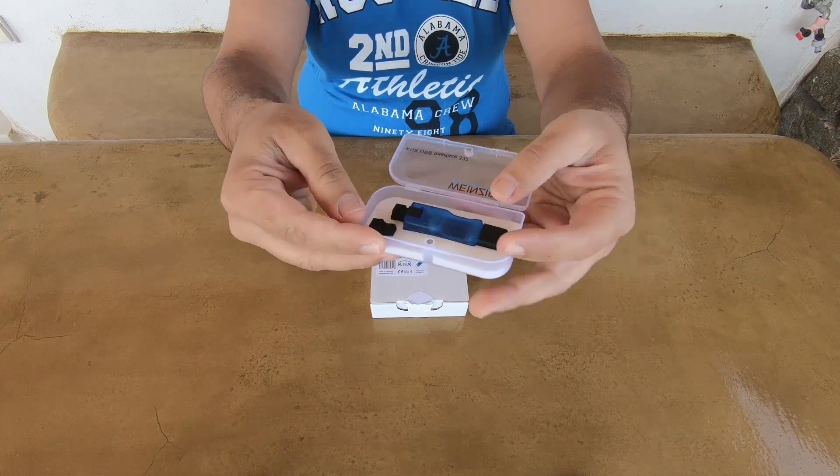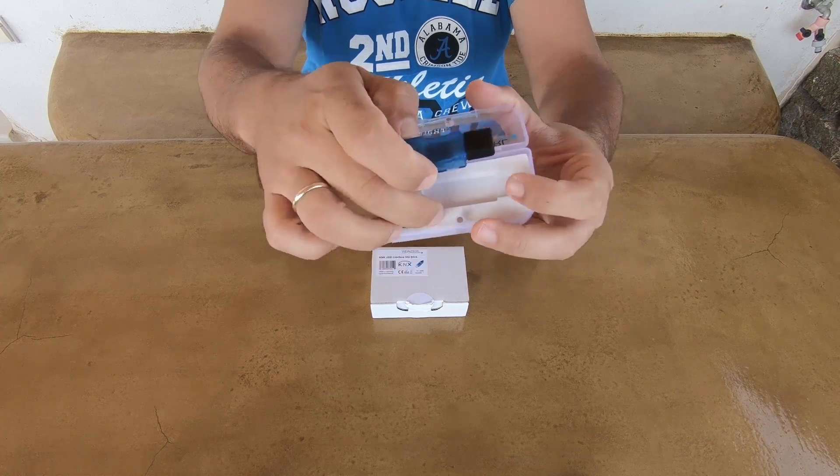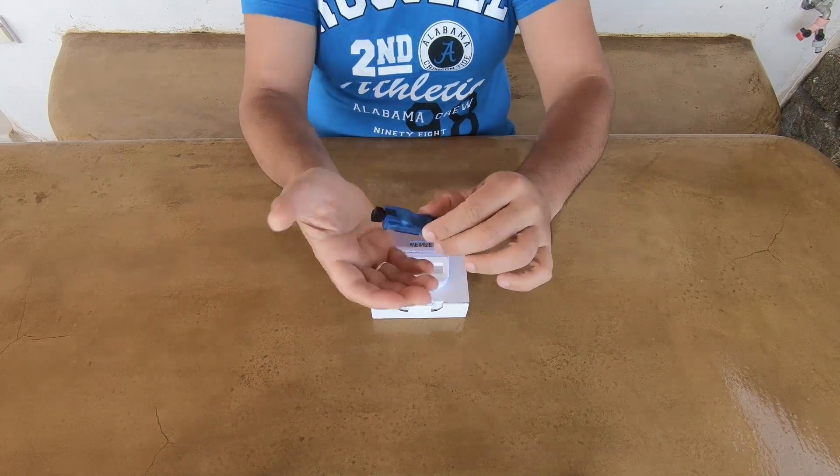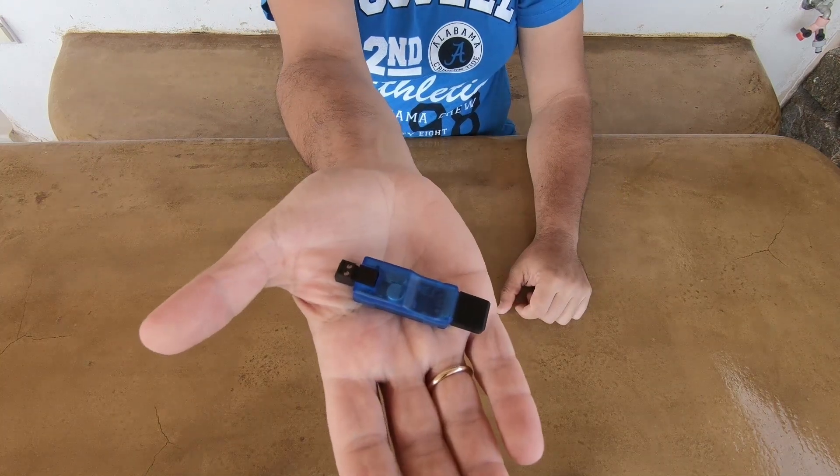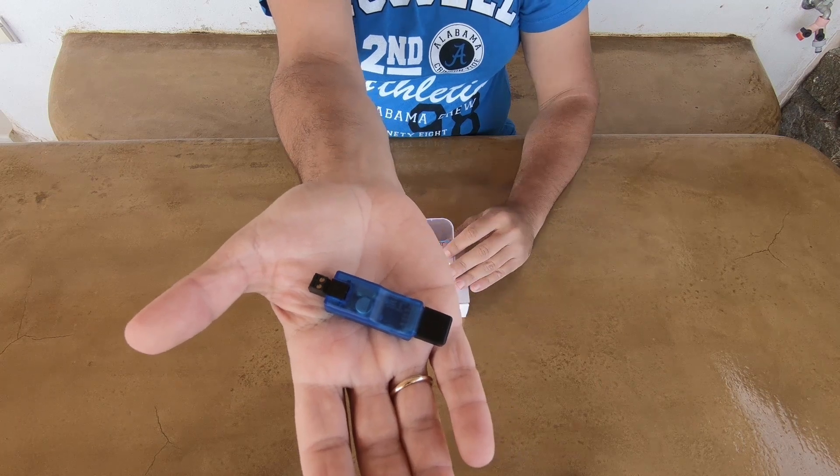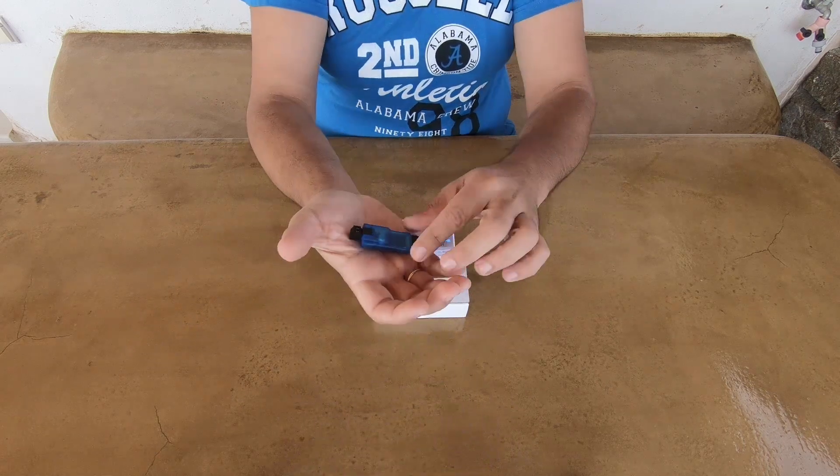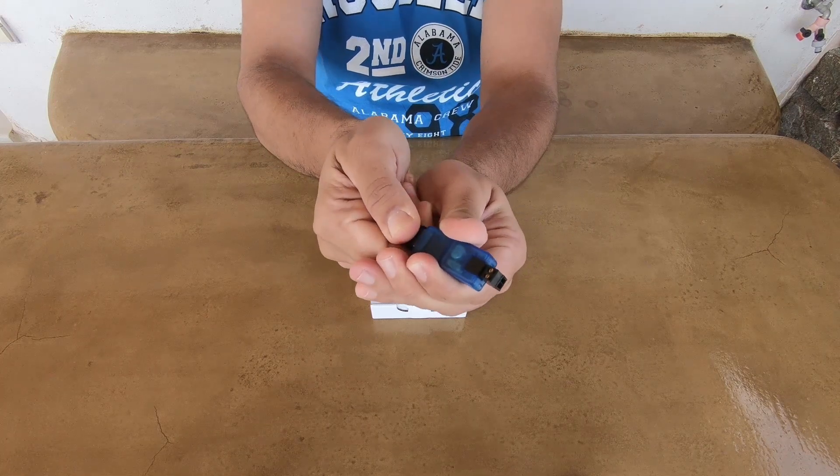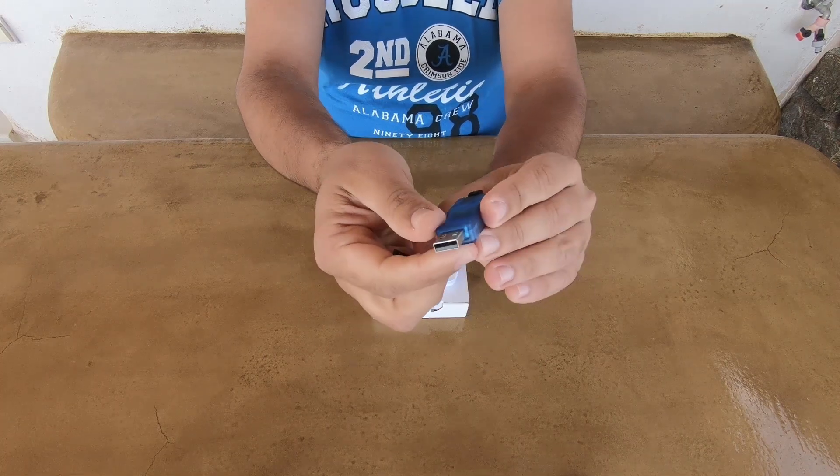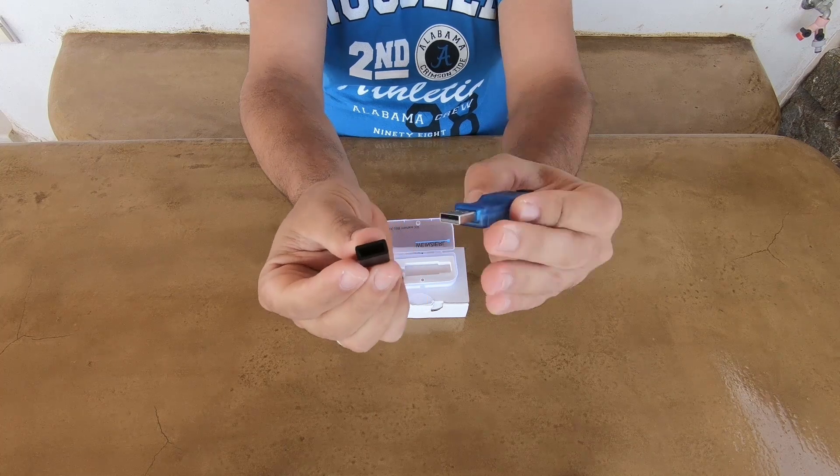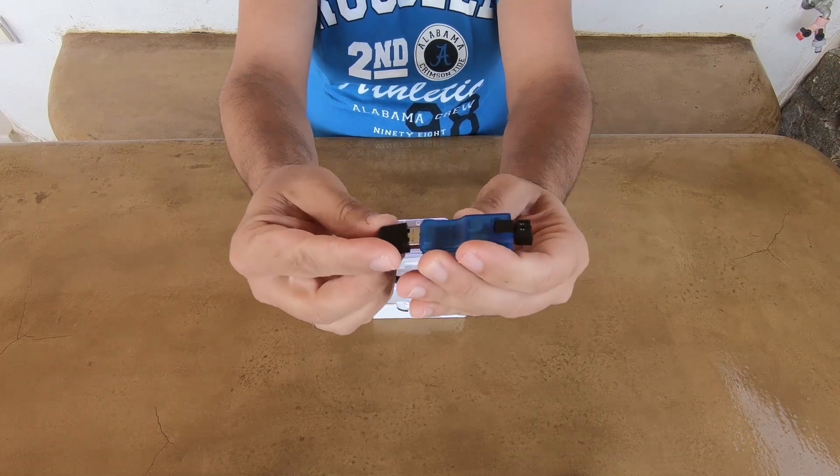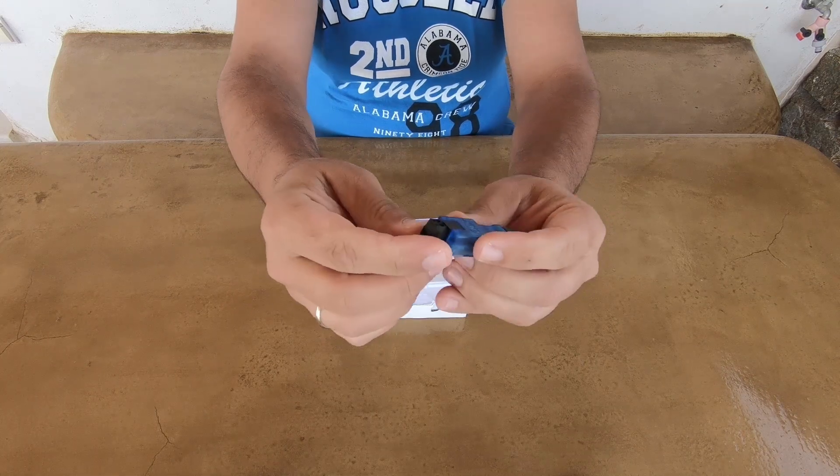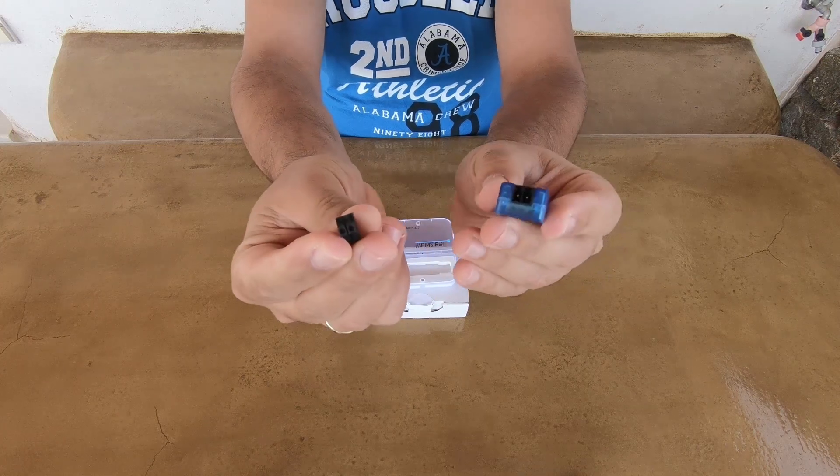Let's check now the USB Interface. Look how small it is. It's like a normal USB stick. It has a plastic cover for protecting the USB connector. And at the back there is a connector for the KNX.